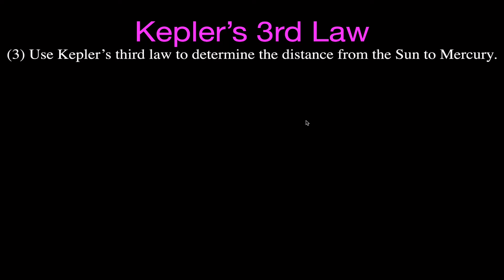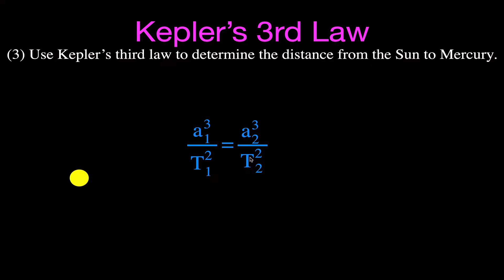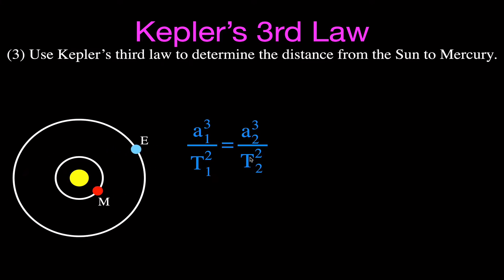For example three, we use Kepler's Third Law to determine the average distance from the Sun to Mercury — Mercury's semi-major axis. We use the form: A₁³/T₁² = A₂³/T₂². We'll use Earth as planet 1, with a semi-major axis of 150 million kilometers and a period of 365 days, and Mercury as planet 2, with an orbital period of 88 days.